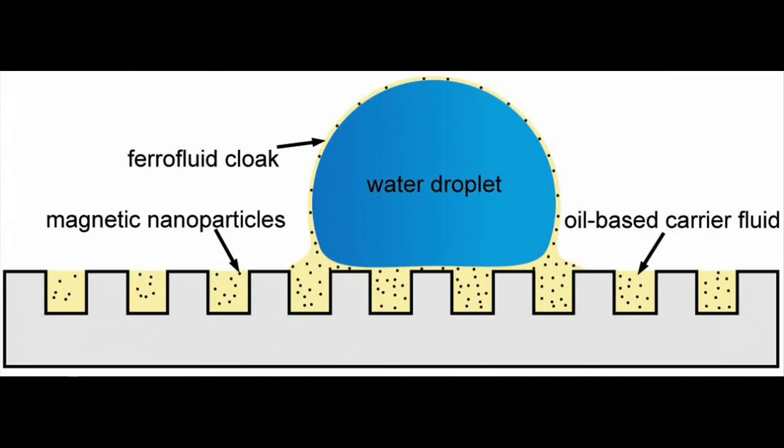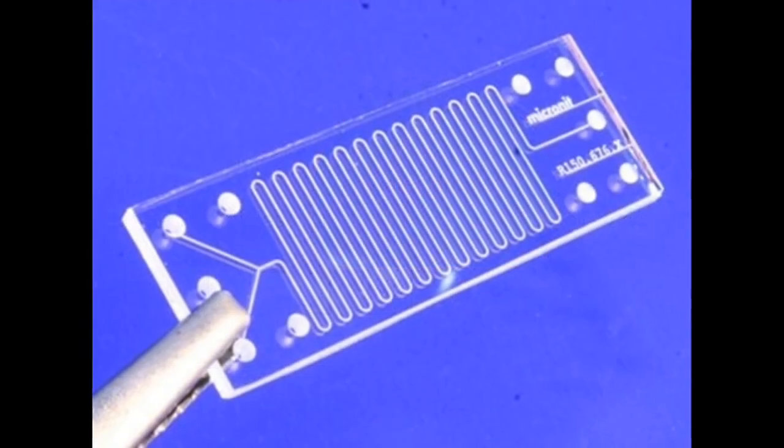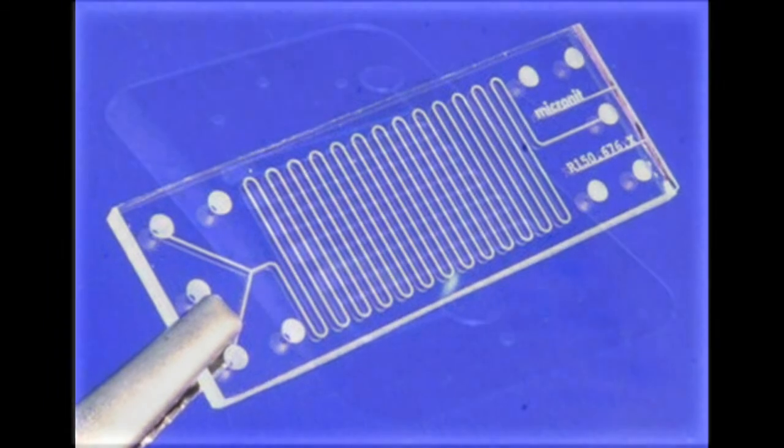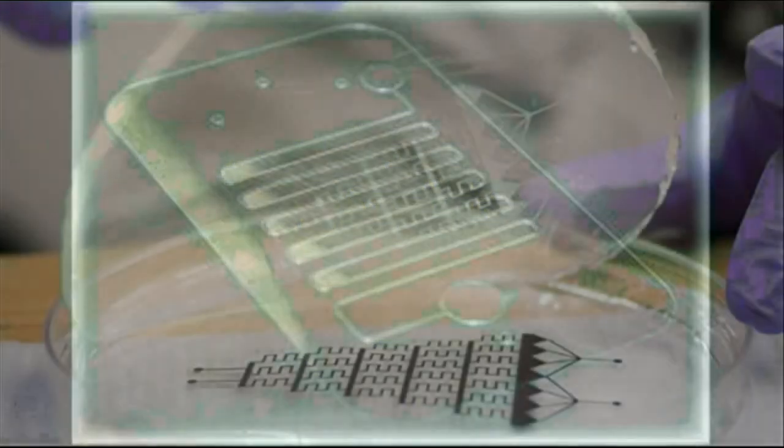Tiny ferromagnetic particles, approximately 10 nanometers in diameter, in the ferrofluid could allow precision control when it's needed, such as in a microfluidic device used to test biological or chemical samples by mixing them with a variety of reagents.